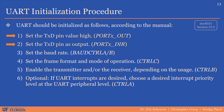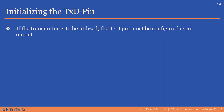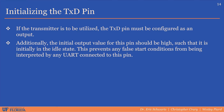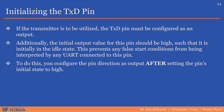The transmit pin should only be initialized if the UART's transmitter is to actually be utilized — if so, the transmit pin must be configured as an output. In some cases, a UART may only ever need to receive data. Additionally, the output value for this pin should be set high such that the communication line is initially in the idle state, ensuring there are no false start conditions interpreted by any other connected UART device. It's very important, as with typical IO pin initialization, to configure the pin's output value before setting the direction as output.